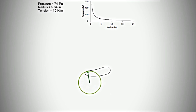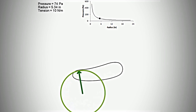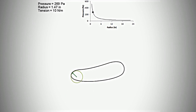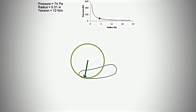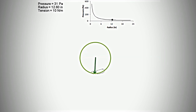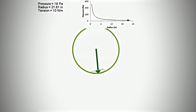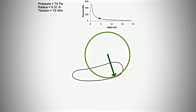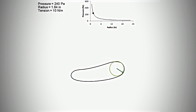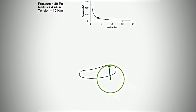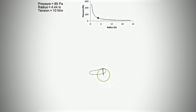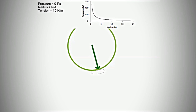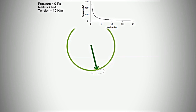We have tension here expressed in newtons per meter, the radius in inches, and the pressures in pascals. We see that little dot change as it comes around — more pressure here, less pressure there, and then it flips to the concave side: zero pressure.